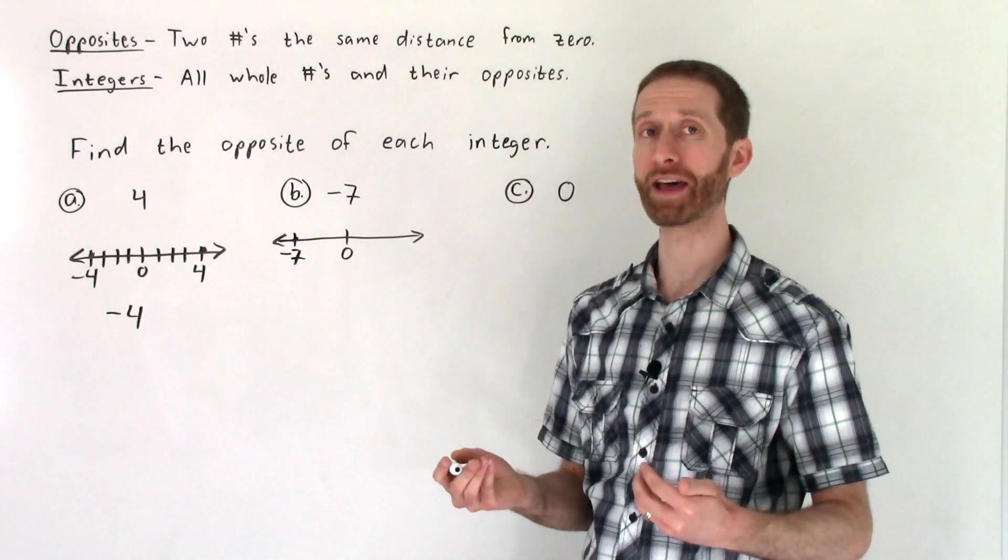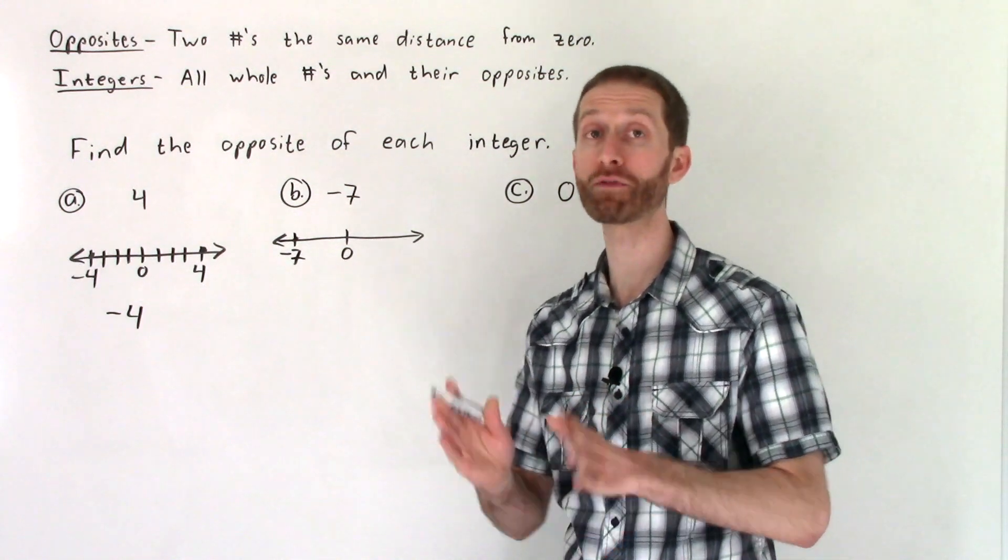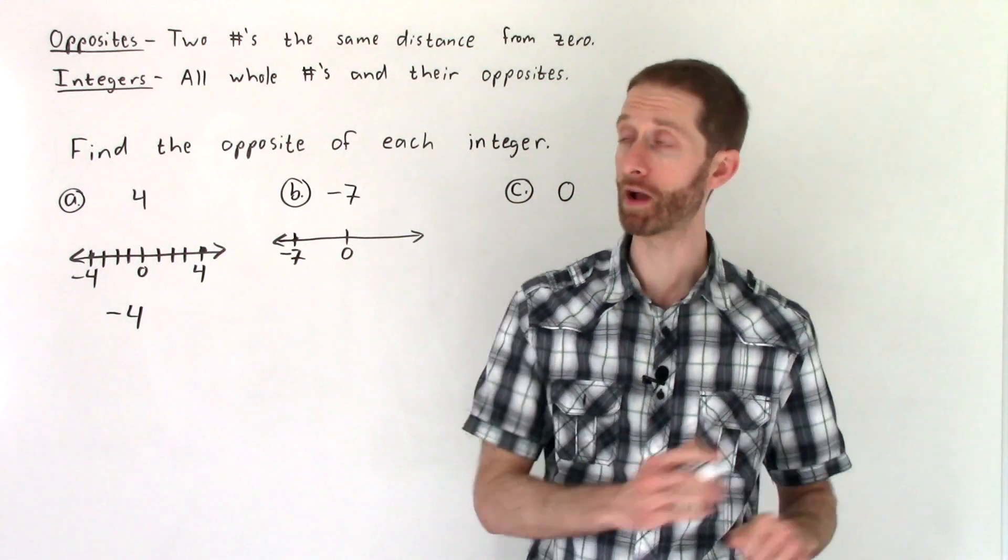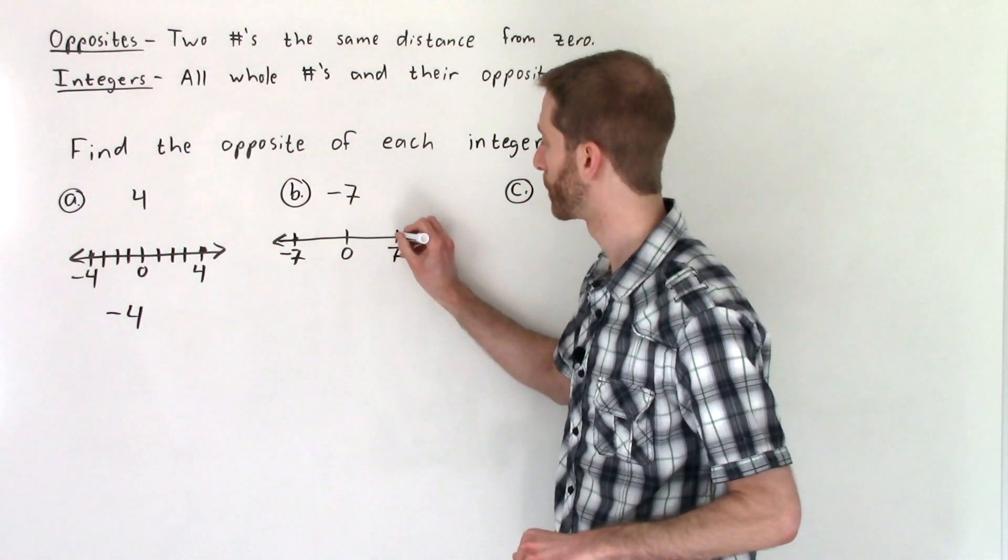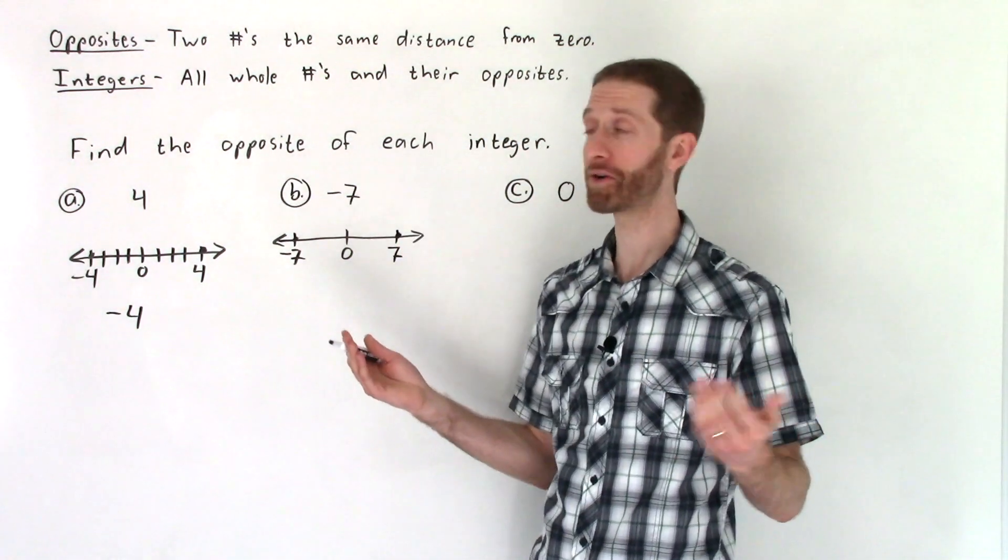That means that the opposite of negative seven would be a number that is seven away from zero in the rightward direction, the other direction, which would be over here to the right. There we go. And that's all there is to it.